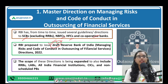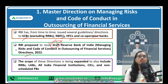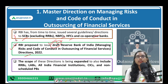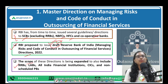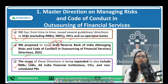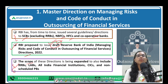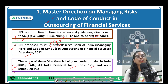RBI is going to incorporate all these directions into a draft direction to be known as 'Reserve Bank of India — Managing Risk and Code of Conduct in Outsourcing of Financial Services Directions 2022.' The scope will also be expanded by including Regional Rural Banks (RRBs), since they too have started outsourcing services. All India Financial Institutions, Credit Information Companies, and all non-scheduled payment banks will also be included under this direction.